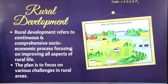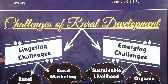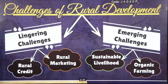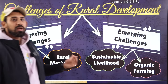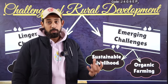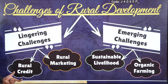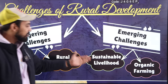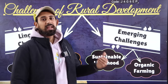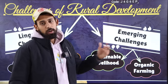The plan focuses on various challenges in rural areas. There are two challenges: lingering challenges (existing ones) and emerging challenges (current/new ones). In lingering challenges we talk about money and marketing, and in emerging challenges we have sustainable livelihood — which includes agriculture, organic farming, and more.